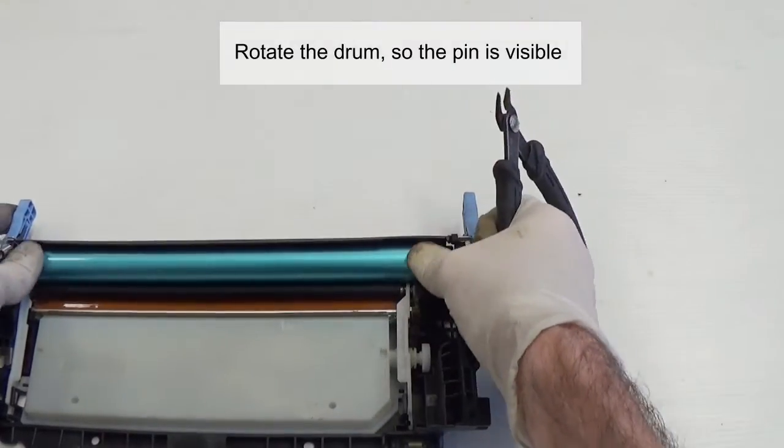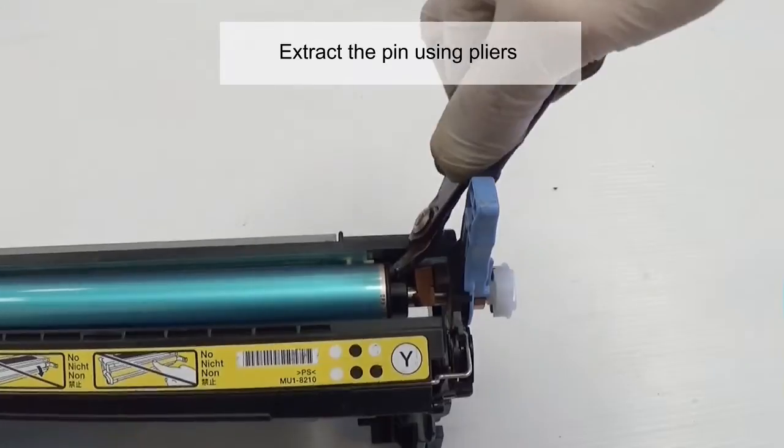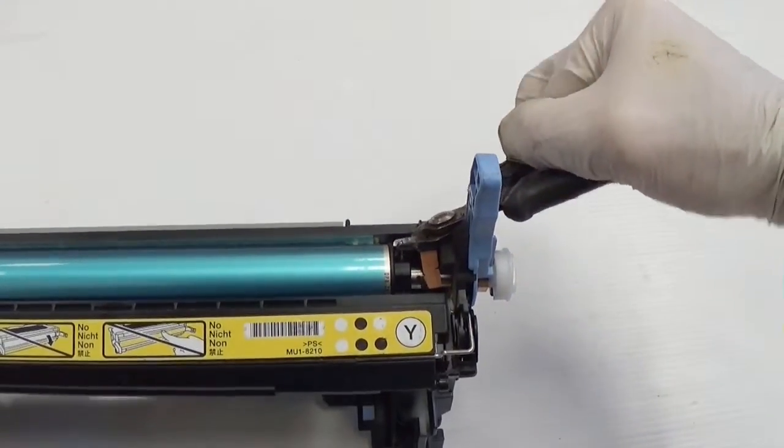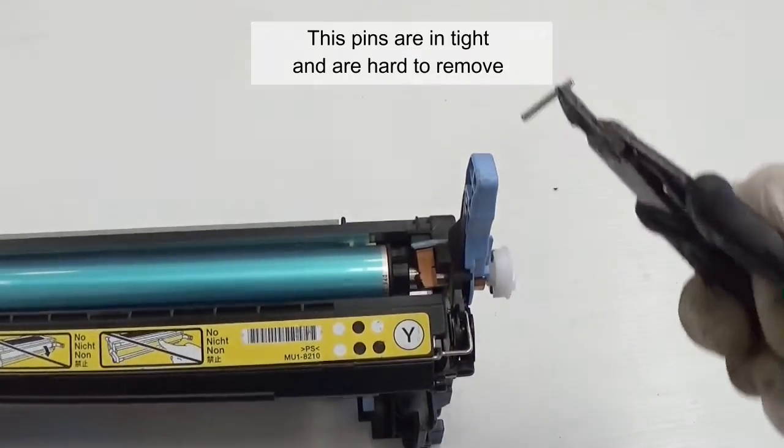Rotate the drum so the pin is visible. Extract the pin using pliers. These pins are in tight and are hard to remove.